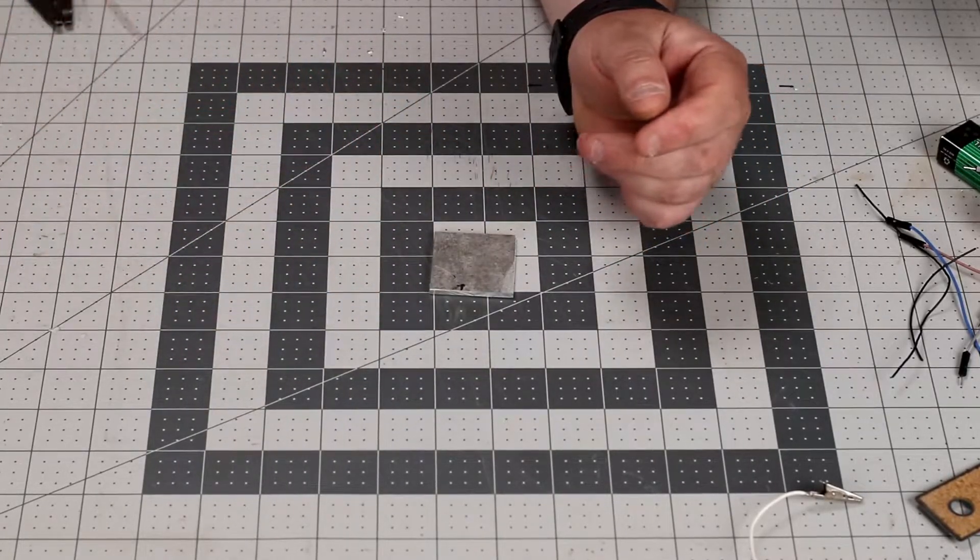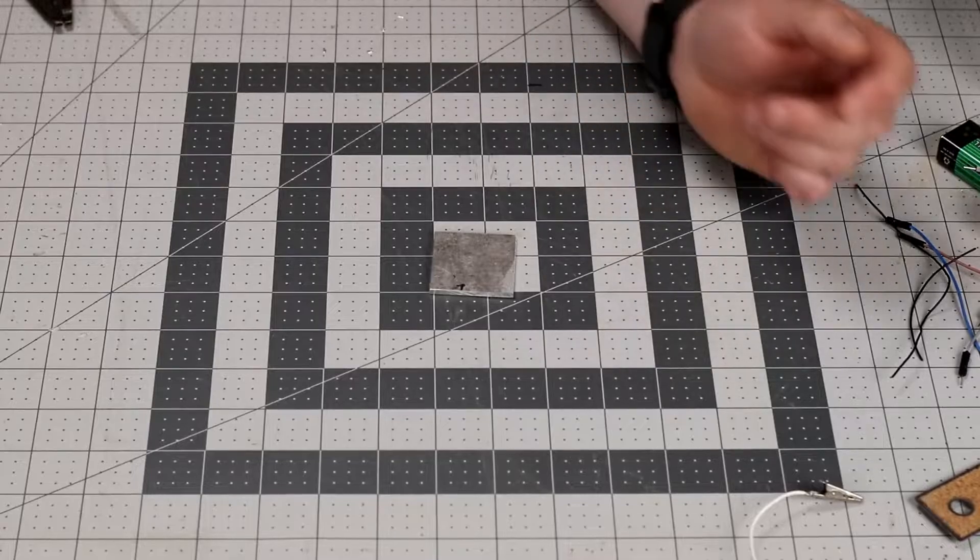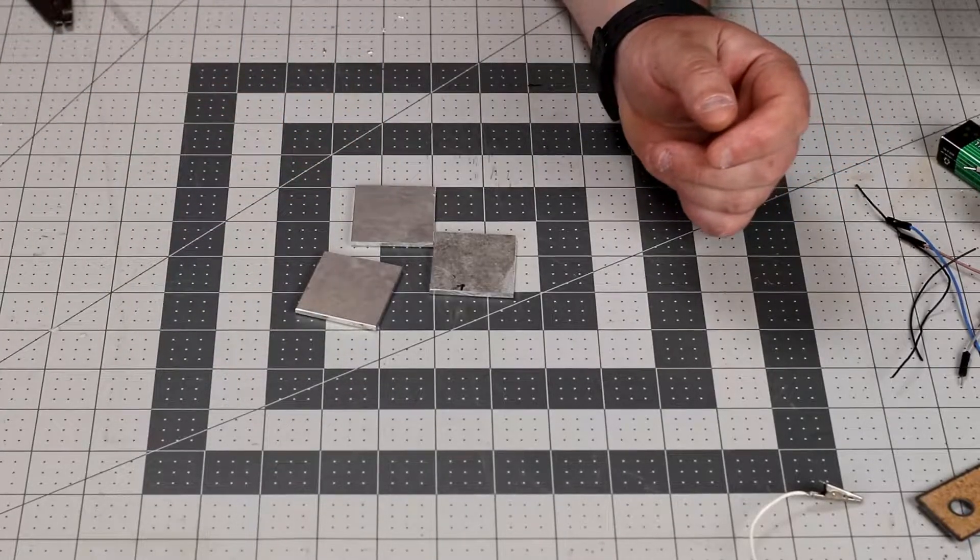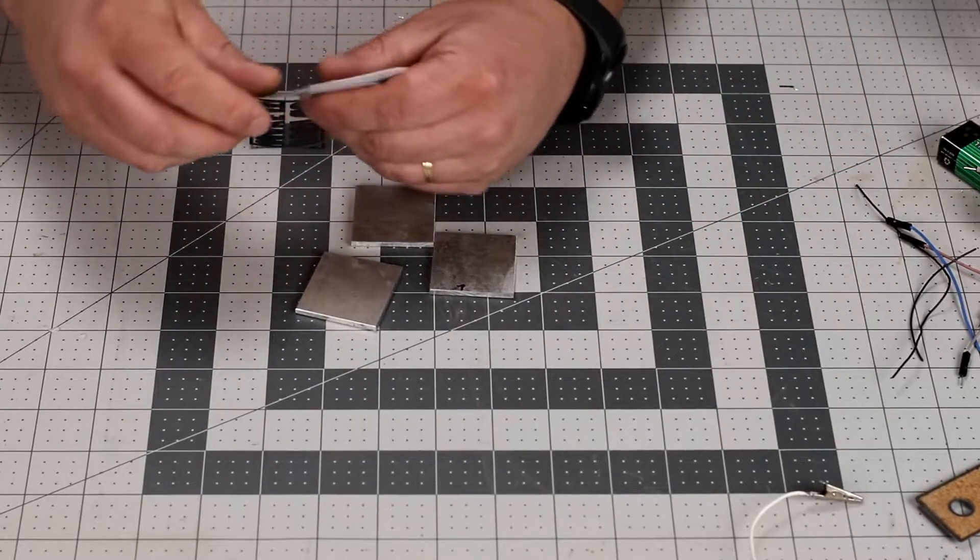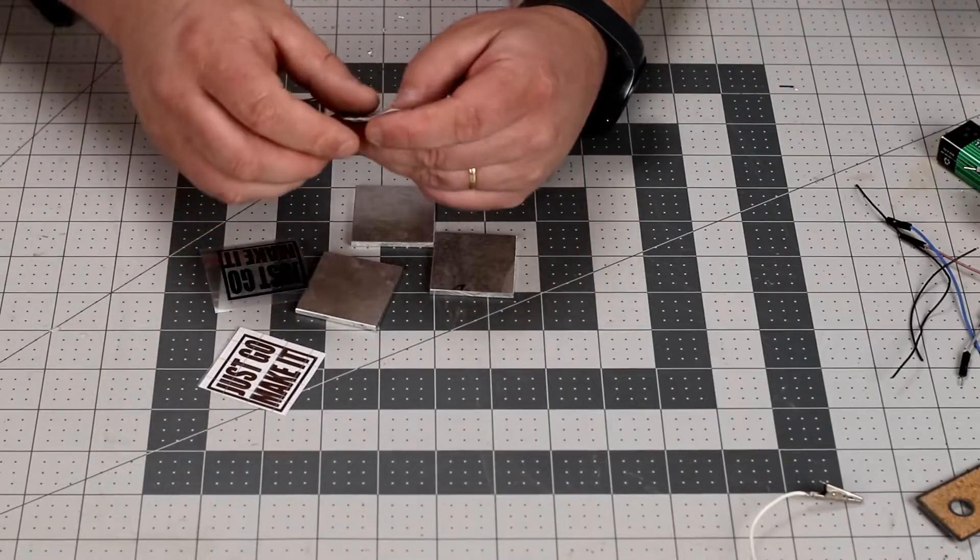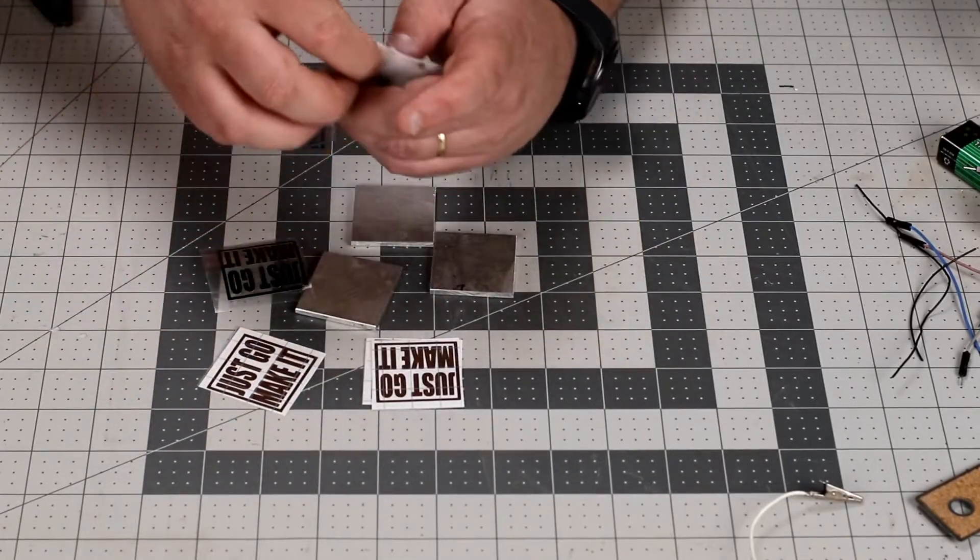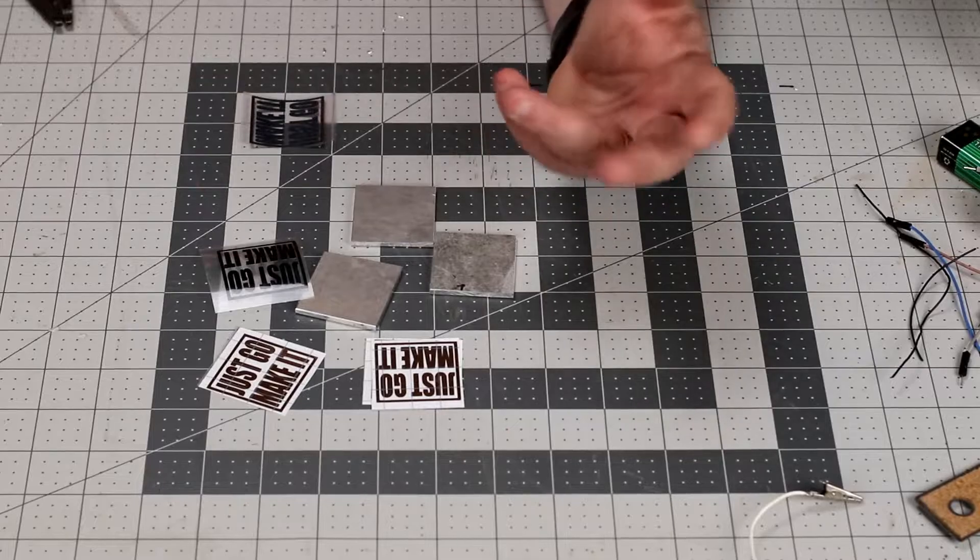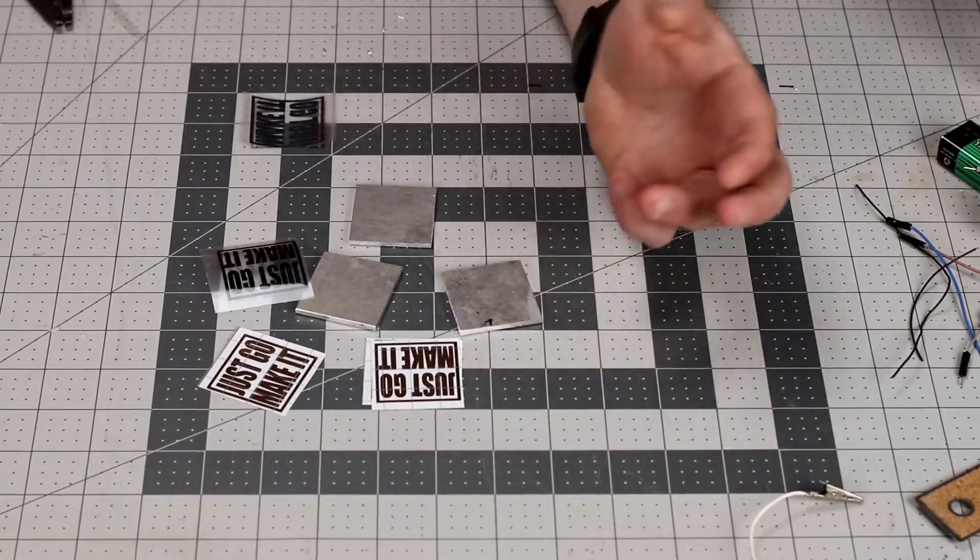I'm going to try to etch some metal. I have some little aluminum squares here and I cut out some little vinyl decals that I'm going to use for my resist and we're going to etch them and see what happens.